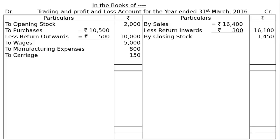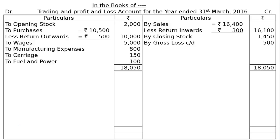There is one more item left: fuel and power rupees 100. Since factory expenses and purchases are higher than sales and closing stock, we have incurred a gross loss. The debit side totals rupees 18,050. Taking this to the credit side and finding the difference gives a gross loss carried down of rupees 500, which will be brought into the profit and loss account.